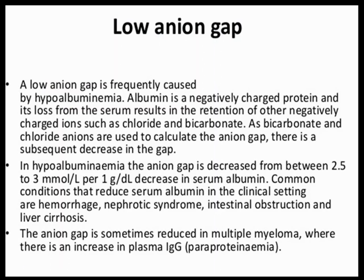A low anion gap is most importantly caused by hypoalbuminemia, because albumin is a negatively charged protein. A decrease in albumin of one gram per deciliter can cause the anion gap to decrease by 2.5 to 3 times. For example, in a patient with diabetic ketoacidosis who has low albumin, the calculated anion gap may appear normal — which can be misleading.